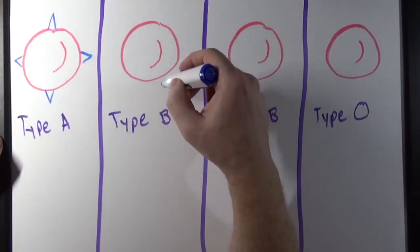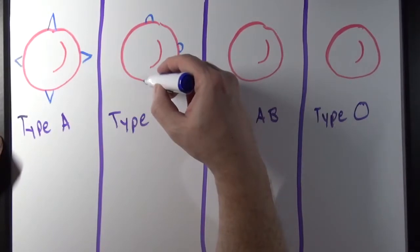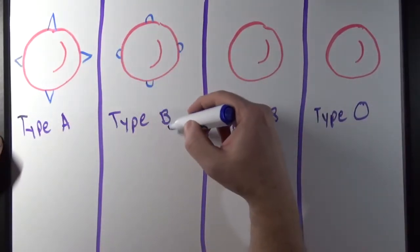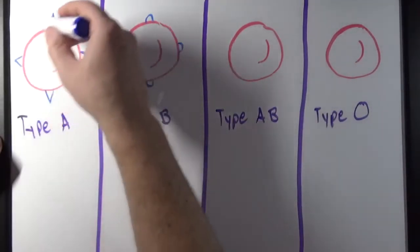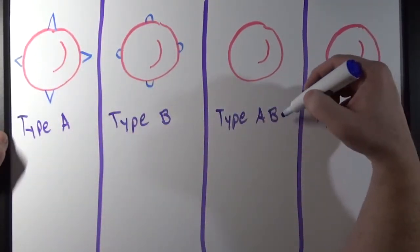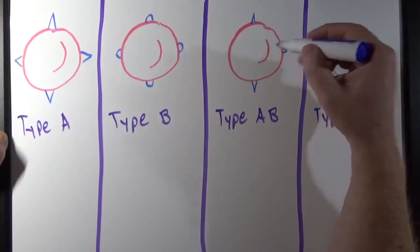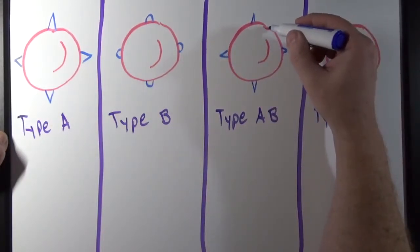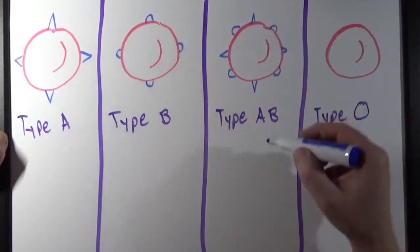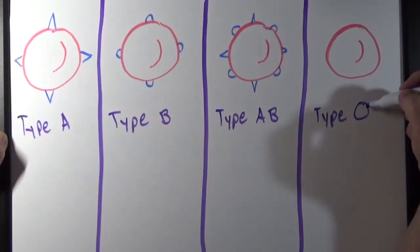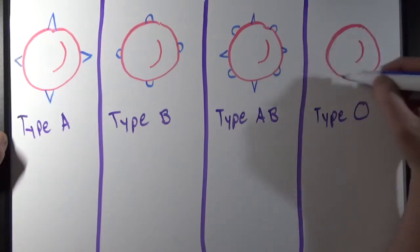This person with type A blood will have surface antigens — I'll draw them looking like A's. This person with type B blood will have surface antigens that are rounded like B's. This person with type AB blood will have both A and B surface antigens. This person who has type O blood is going to have no surface antigens — type O has no surface antigens.